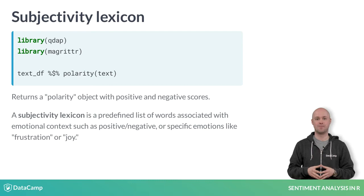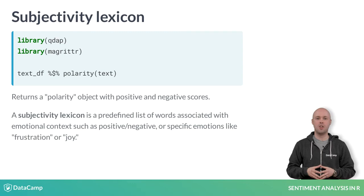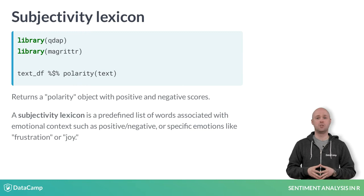A subjectivity lexicon is a predefined list of words associated with a specific emotion or positive or negative feelings. For example, the words bad, awful, and terrible can all reasonably be associated with a negative state. In contrast, perfect or ideal can be connected with positivity. In some cases, sentiment analysis is merely the comparison between the author's text and the predefined subjectivity lexicon.